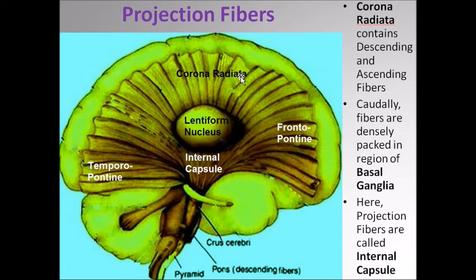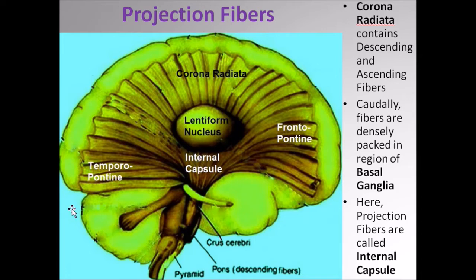We shall see subsequently that this corona radiata has got many components, all labeled here. The corona radiata has been indented from the lateral aspect by one nucleus, which is referred to as the lentiform nucleus. As these fibers converge caudally, they become more tightly packed. And in the region of the basal ganglia, they come to be known as the internal capsule, which is going to be the main topic for today.